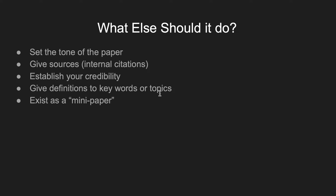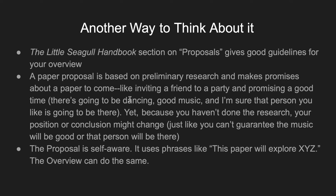You should also set the tone for the paper. I want you to cite things and mention your sources. I'd rather see attributive phrases where you say 'this article by so-and-so' rather than just a citation, but have citations as well. You're establishing your credibility and showing your readers that you're serious about this topic. You can give definitions to key words or parts of the topic. Think of it as existing like a mini paper. The Little Seagull Handbook talks about proposals, and that's really what this is based on — a proposal. We do paper proposals when you might submit something to a conference.